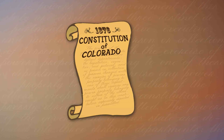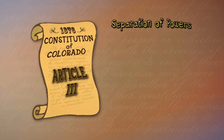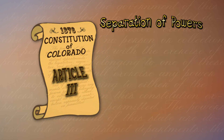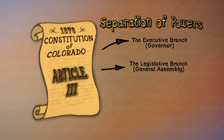It all starts with the Colorado Constitution. Article 3 of the Colorado Constitution designates three separate and distinct branches of government: the executive branch, the legislative branch, and the judicial branch.